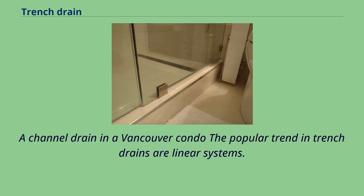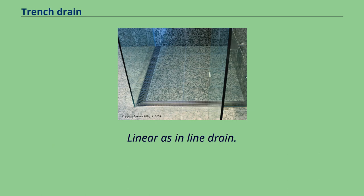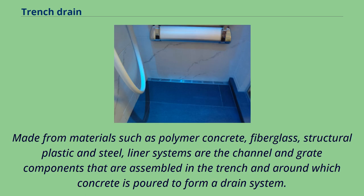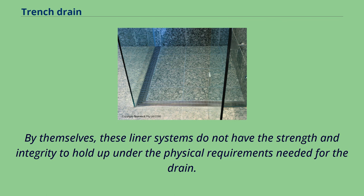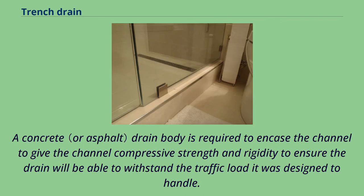The popular trend in trench drains is linear systems — linear as in line drain. Made from materials such as polymer concrete, fiberglass, structural plastic, and steel, liner systems are the channel and grate components that are assembled in the trench and around which concrete is poured to form a drain system. By themselves, these liner systems do not have the strength and integrity to hold up under physical requirements. A concrete drain body is required to encase the channel to give it compressive strength and rigidity, ensuring the drain can withstand the traffic load it was designed to handle.